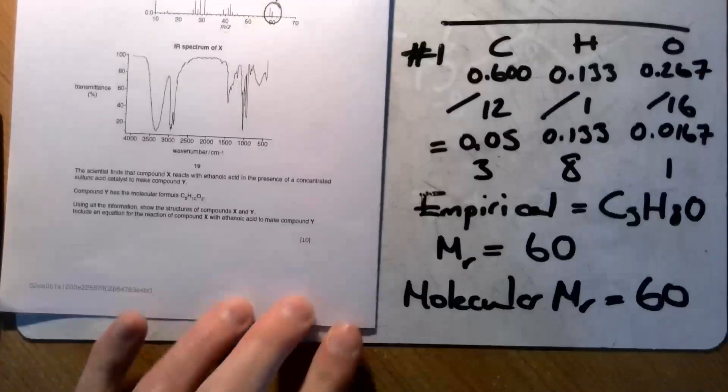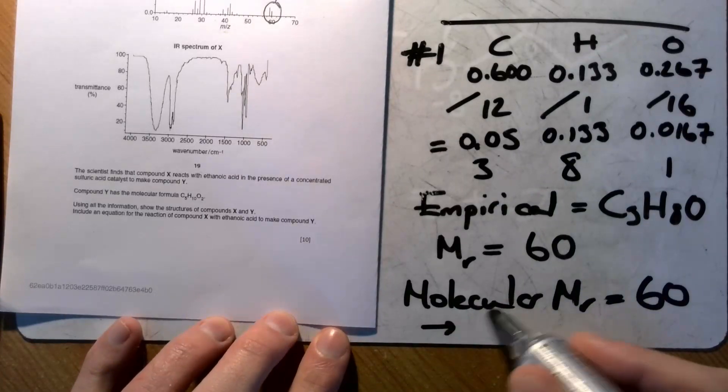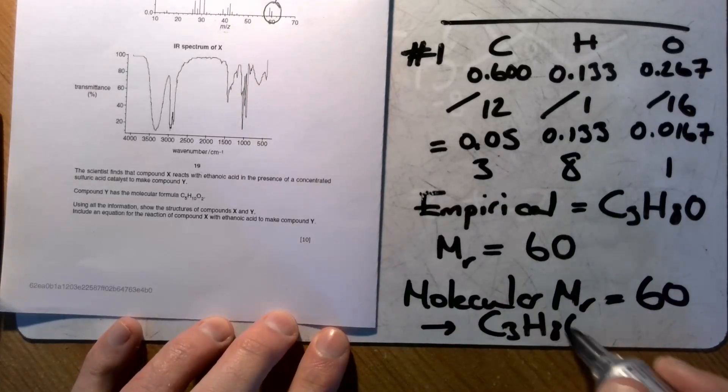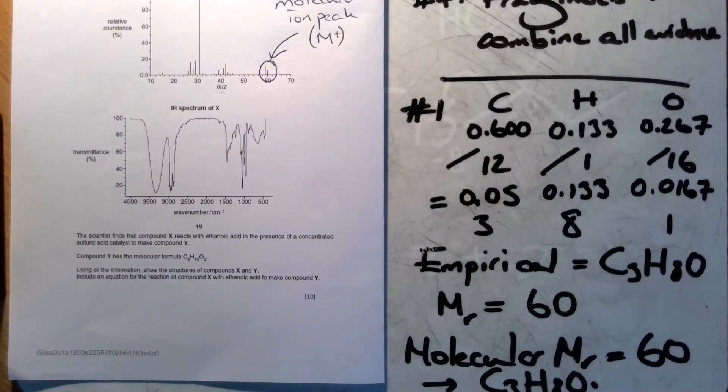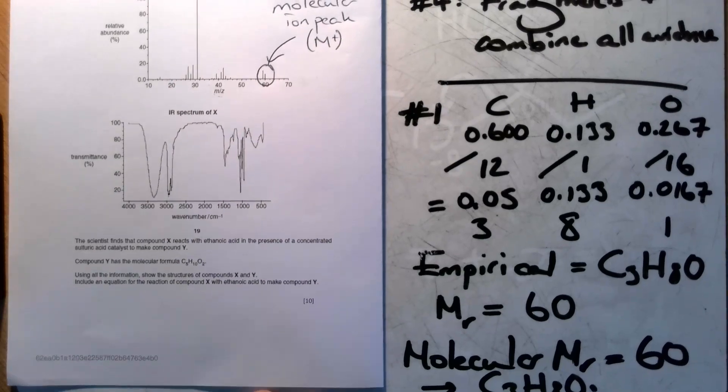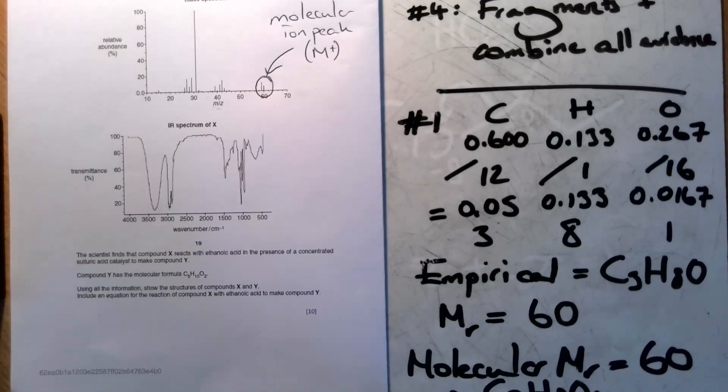So the relative molecular mass is also 60, so that must also be C3H8O. So for this now we know we're looking at a molecule which has a formula of C3H8O. Now we can go on to look at the infrared spectrum.